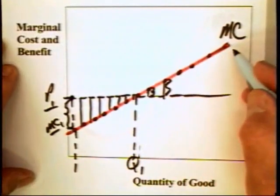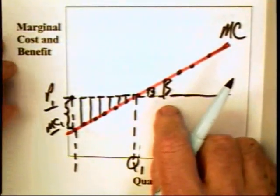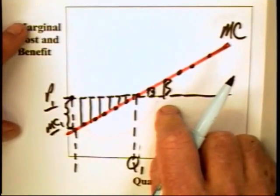Now, we have drawn the marginal cost curve as a straight line and strictly upward slope. That need not be the case.